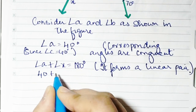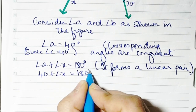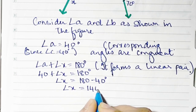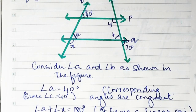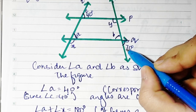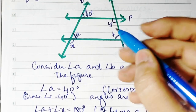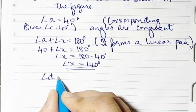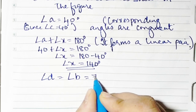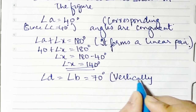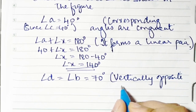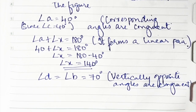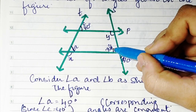Since a is 40, we have 40 plus angle x equals 180 degrees. So angle x is 180 minus 40, which gives angle x equal to 140 degrees. Now we need to find angle y. This angle is 70, so let's call this d. Angle d equals angle b equals 70 degrees because vertically opposite angles are congruent.